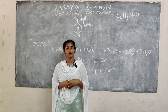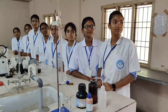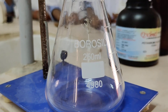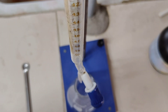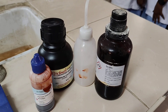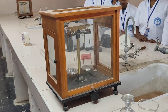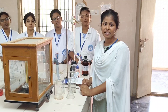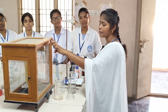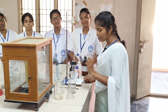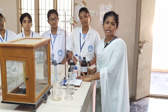Now I will go to prepare the SA of Isoniazid. These are the apparatus that we used in the SA of Isoniazid: burette stand, burette, beam balance, beaker, funnel, spatula, and conical flask. These are also the chemicals used in the SA of Isoniazid.